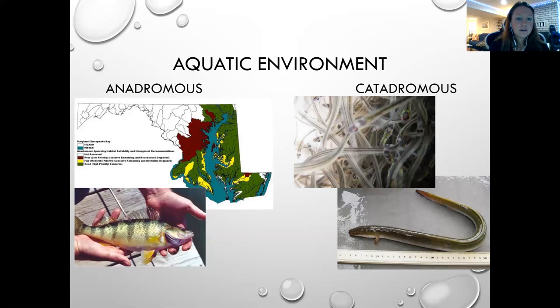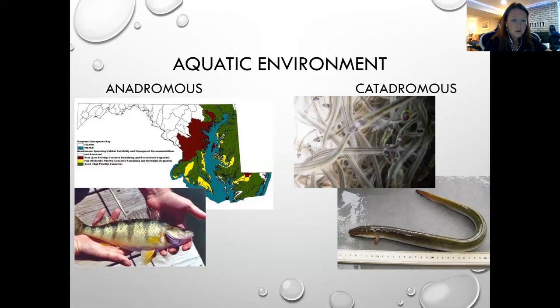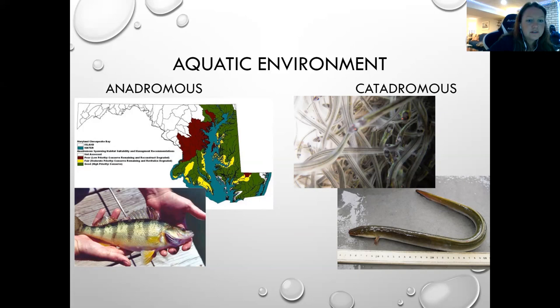Here we have anadromous fish on the left and catadromous fish on the right. Anadromous fish migrate from the sea up river to spawn — salmon and yellow perch do this. Catadromous fish do the opposite, going from the river to the sea to spawn. The American eel is the only catadromous species we have.